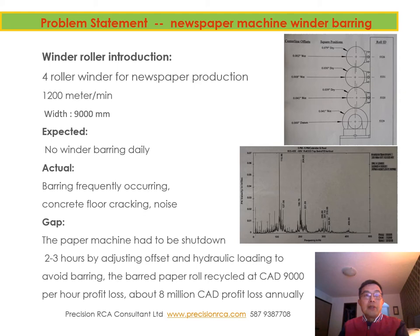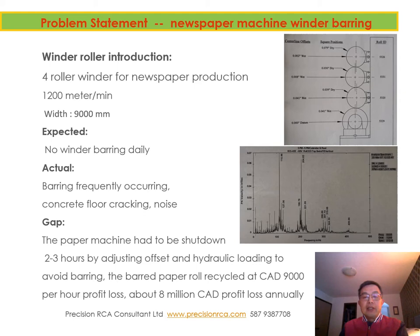Barring is actually frequently occurring there. Looking at history, it started from 2004 — we checked the condition monitoring data and we do have vibration barring over there. When the barring happened, the vibration waveform is shown in the second picture. This paper machine has been shut down for two to three hours and we have to adjust the set and adjust the hydraulic loading to try to avoid the barring problem. Sometimes we're lucky, sometimes unlucky. Each hour of shutdown costs this mill about nine thousand dollars, about eight meetings' worth of profit loss annually.